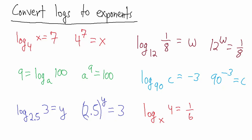Now we have log base x of 4 equals 1/6. We have a fraction again, but that changes nothing. Base x in the logarithm means base x in the exponent. The logarithm itself is 1/6, so 1/6 is the exponent, and that equals 4. So those are 6 simple examples of converting from logarithm notation to exponential notation — they really don't get a whole lot more complicated than that. In a different video, we covered how to convert from exponents to logs.